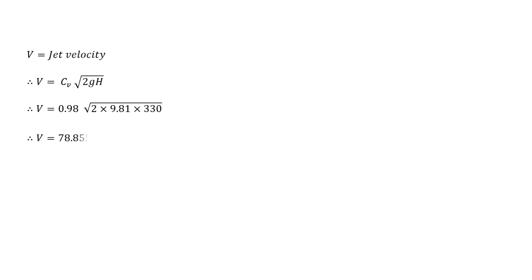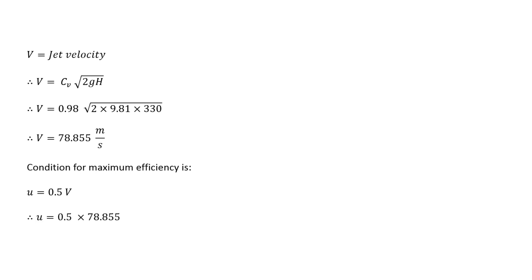Jet velocity is given by Cv times the square root of 2gH. So Cv is 0.98, multiplied by the square root of 2 into 9.81 into 330, which gives us the jet velocity as 78.855 meters per second.